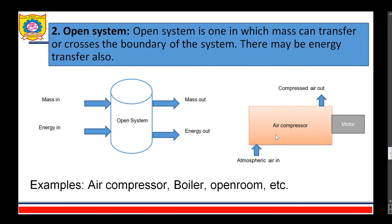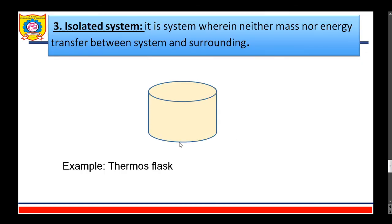The third type of thermodynamic system is the isolated system. It is a system wherein neither mass nor energy transfer occurs across the system boundary. There is no exchange of mass or energy between the system and the surrounding. The example shown is not an exact example of an isolated system because there is a small energy transfer that occurs between the system and surrounding, but approximately we can consider this as the isolated system.